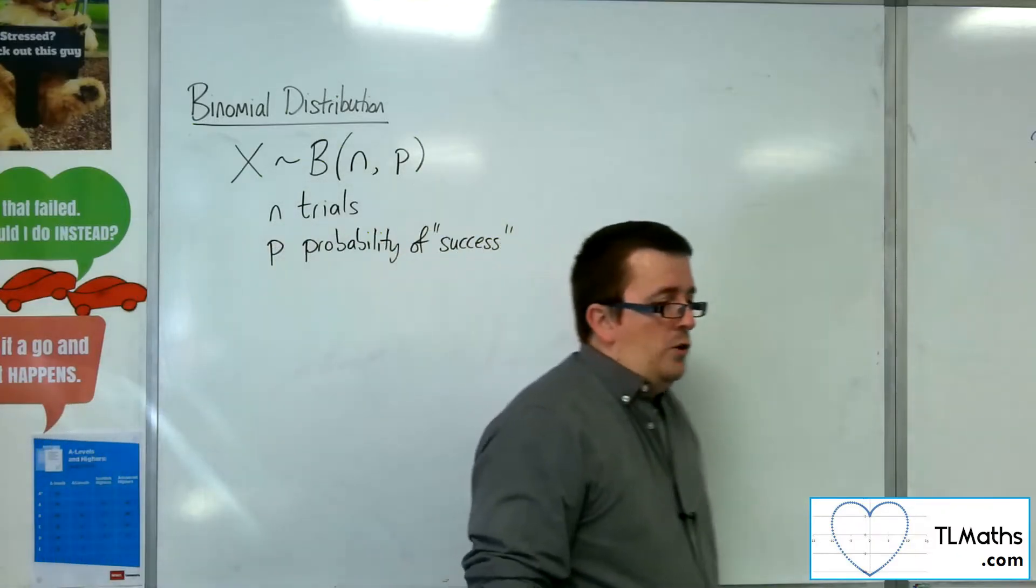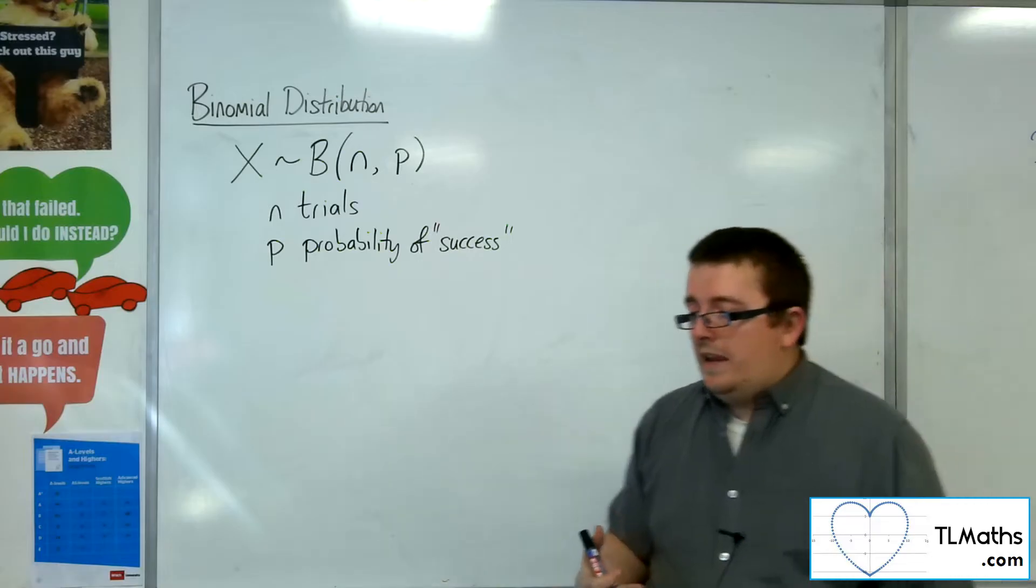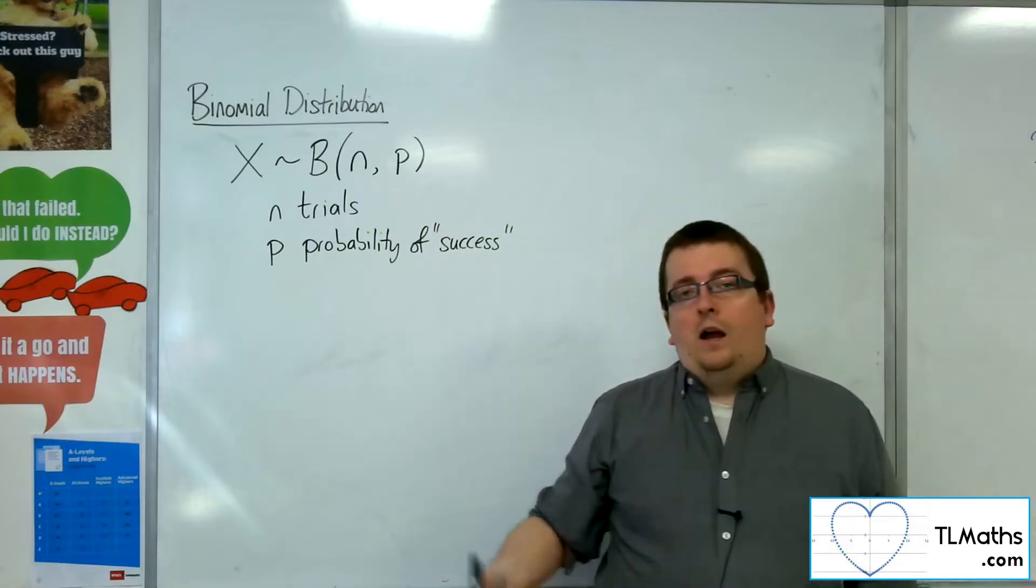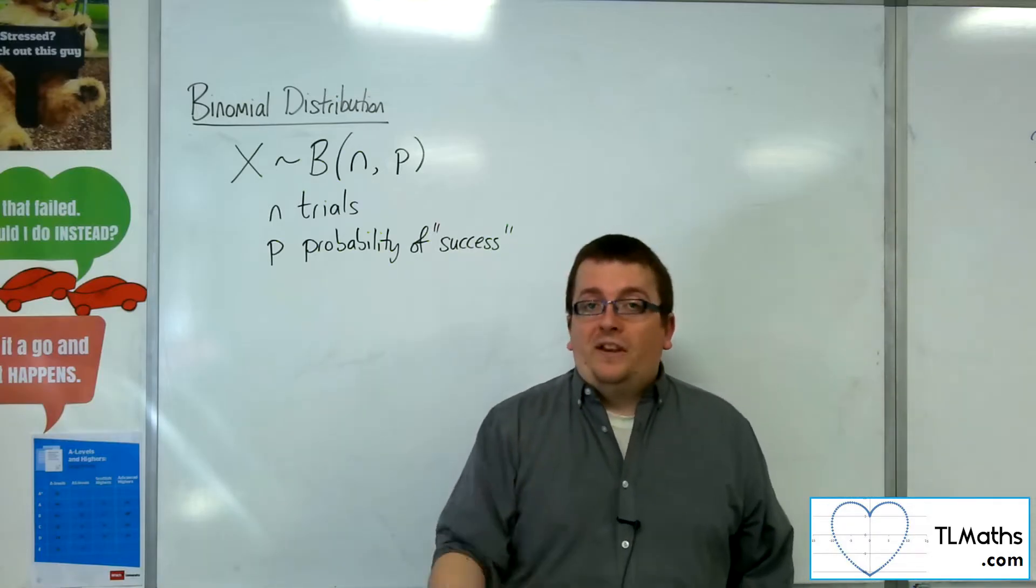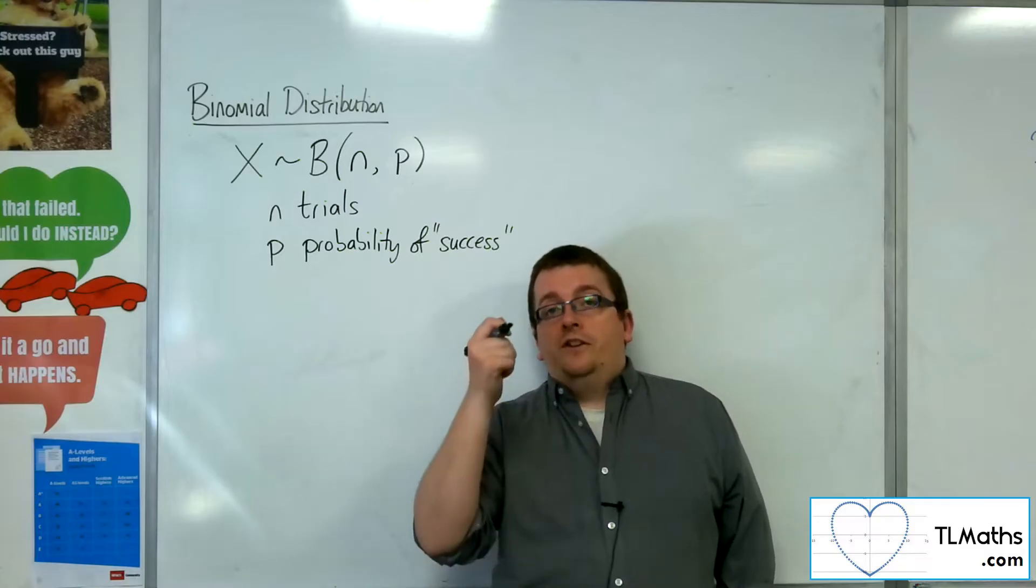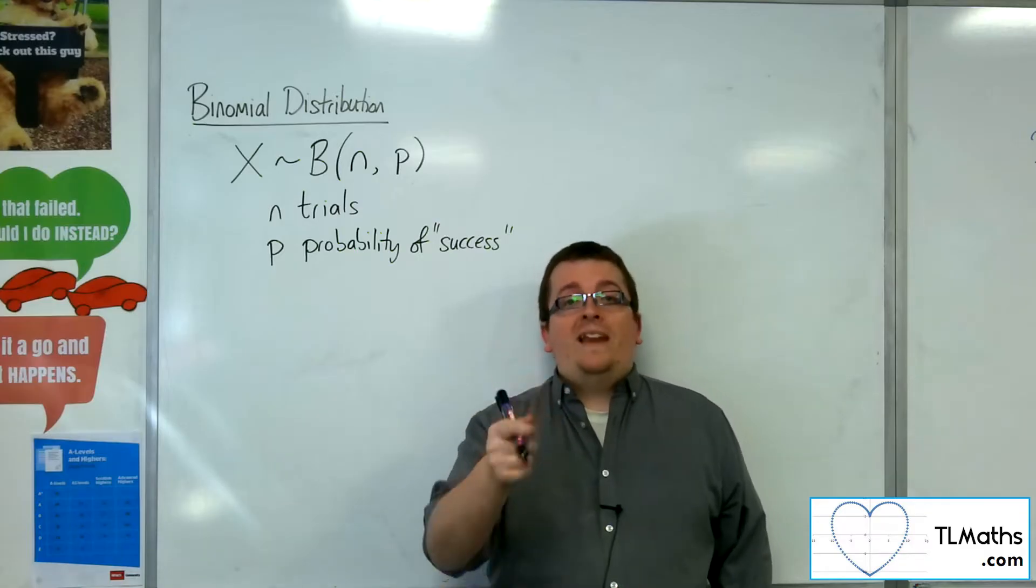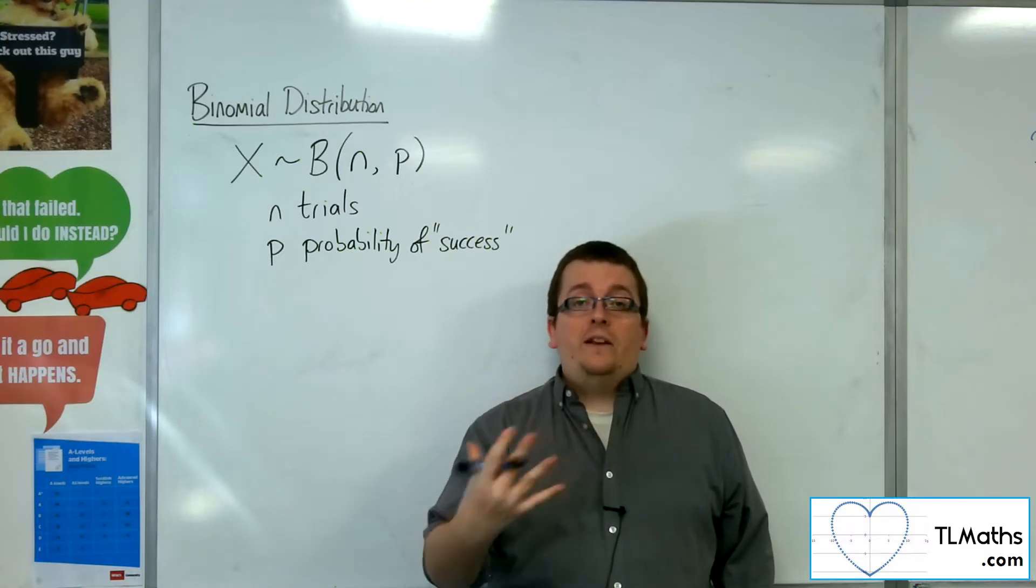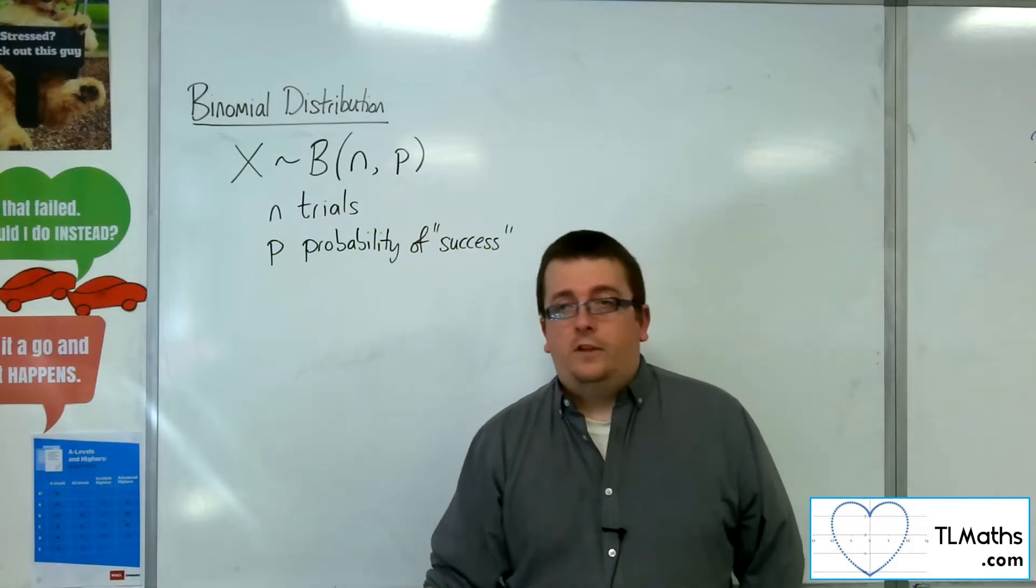So in the example that we saw in the previous video, we were rolling a fair six-sided dice, and the success criteria was getting a six. So the probability of getting a six was one-sixth.